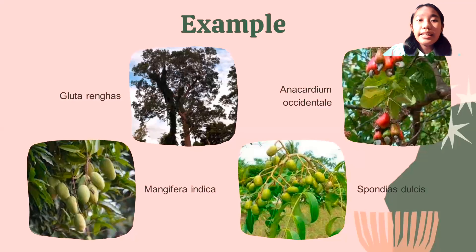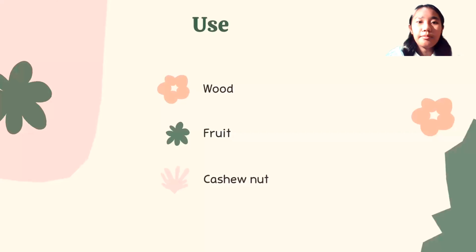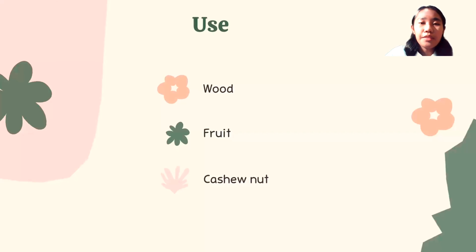Examples of this family are Gluta renghas, Anacardium occidentale, Mangifera indica, and Spondias dulcis. The uses of this family are for wood, food, and cashew nuts.